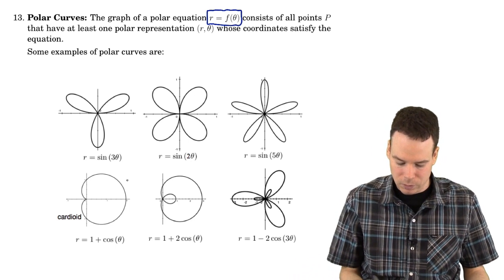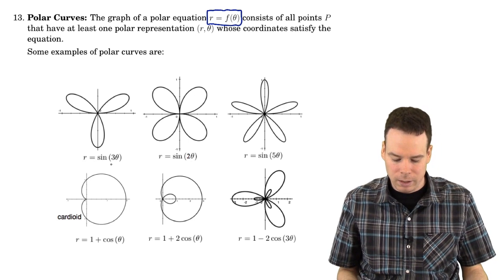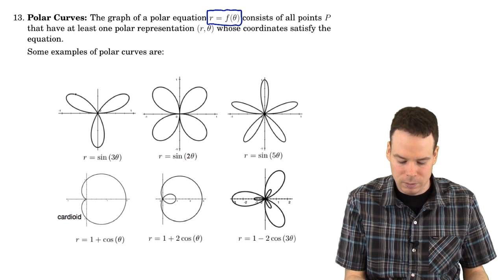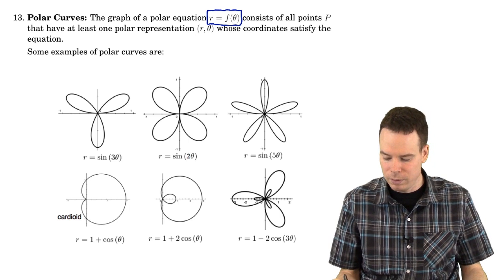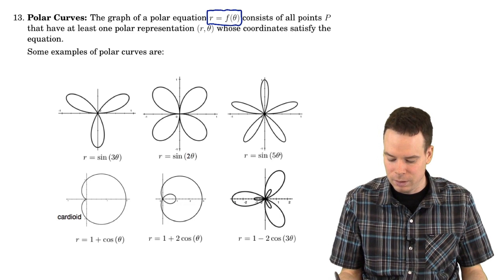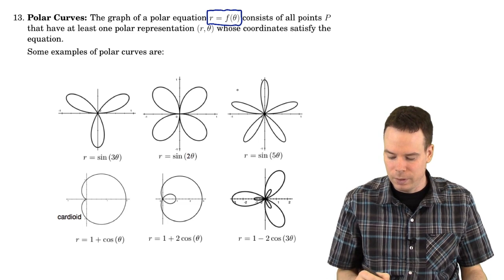So here are some examples of some curves. r equals sine 3 theta - it's got this sort of three leaf flowered kind of structure. 2 sine theta - you've got this 4 leaf one. 5 sine theta, or sine 5 theta, it's got this 5 leaf one.